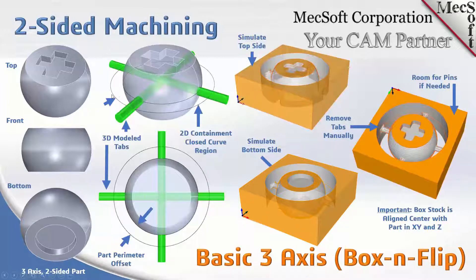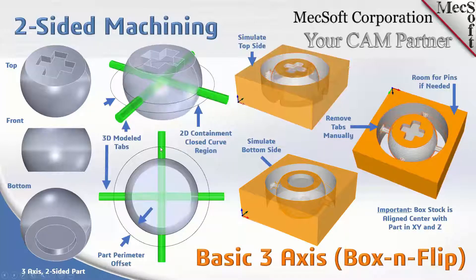We also have a curve, which is a circle lying on the XY plane. That circle is going to contain the tool pass within that area. The tabs or rods we model have to extend past that circle — if they don't, the part simply won't be held together.